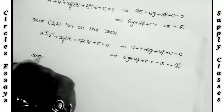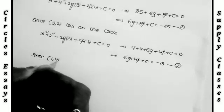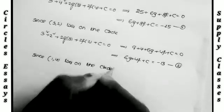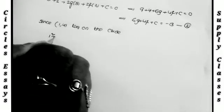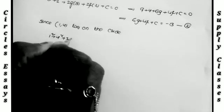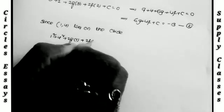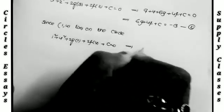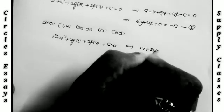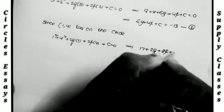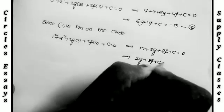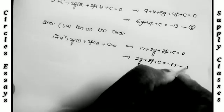Now substituting the third point. Since (1, 4) lies on the circle, substituting this point in the circle equation: 1² + 4² + 2G(1) + 2F(4) + C = 0, which implies 1 + 16 = 17, so 17 + 2G + 8F + C = 0, which implies 2G + 8F + C = −17. This is Equation 3.